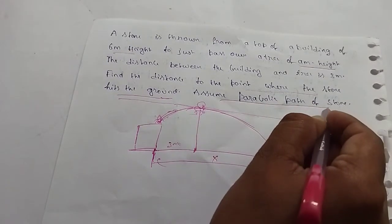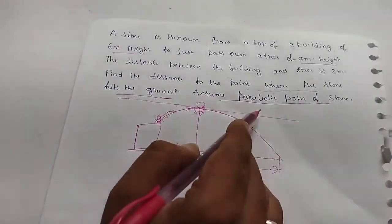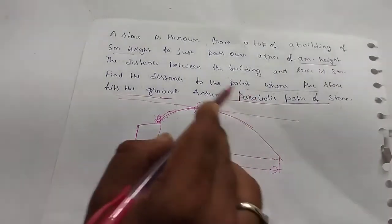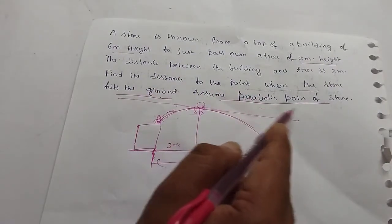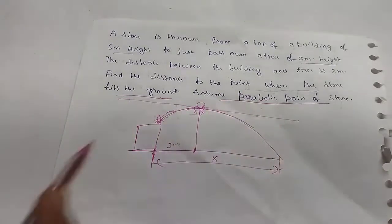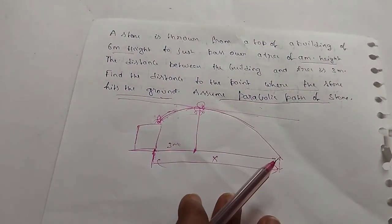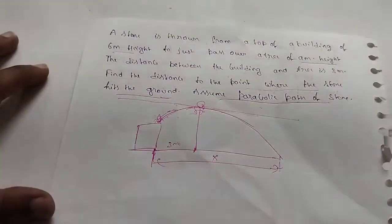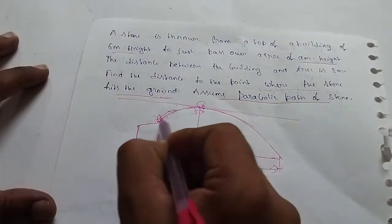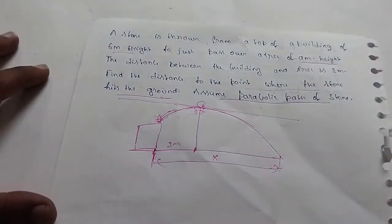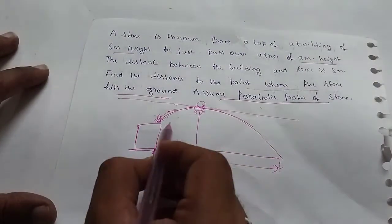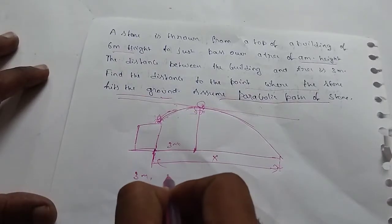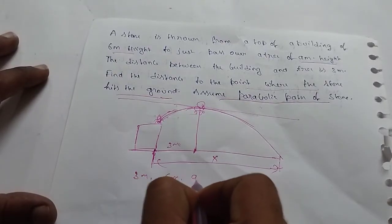We assume the parabolic path of the stone. Now we are going to use a parabolic path. We will draw 3m distance, 6m height, and 9m height.